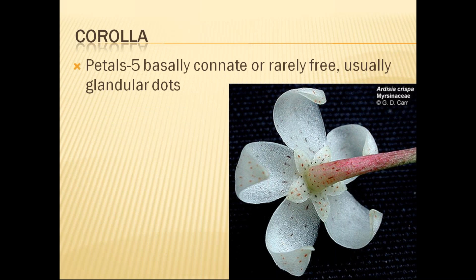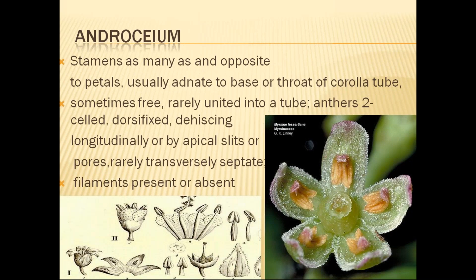The corolla is pentamerous as seen here. The petals are basally connate — they are rarely free — meaning they are generally gamopetalous or gamosepalous, united at the base, and usually glandular. We can see small brownish dots present on the petals — that is one of the particular characteristics of this family. The androecium has as many stamens as petals — normally four or five. They are usually adnate to the base or throat of the corolla tube, as we can clearly see in the photograph.